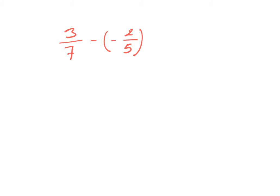We have another example — subtraction of fractions: three over seven minus negative two over five. Since we have a minus with parentheses and a negative inside, that's multiplication of the sign — negative times negative is positive. So it's going to be three over seven plus two over five.